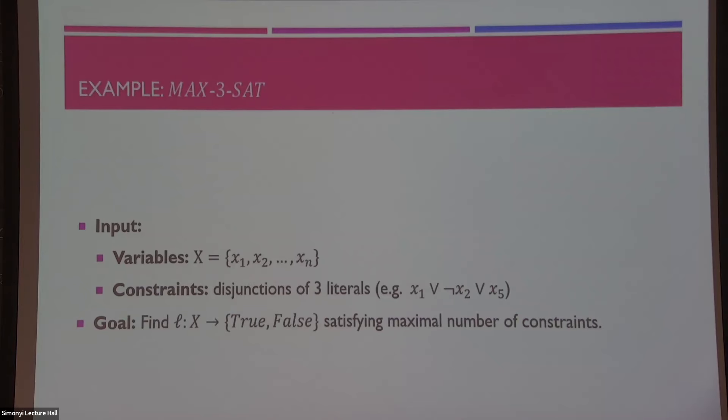And in this case, we want to find an assignment from the variables that are true or false that will satisfy as many of these constraints as possible. Maybe some of you know the decision version of this problem where you need to just determine whether all the constraints could be simultaneously satisfied or not. This is sort of the search version.